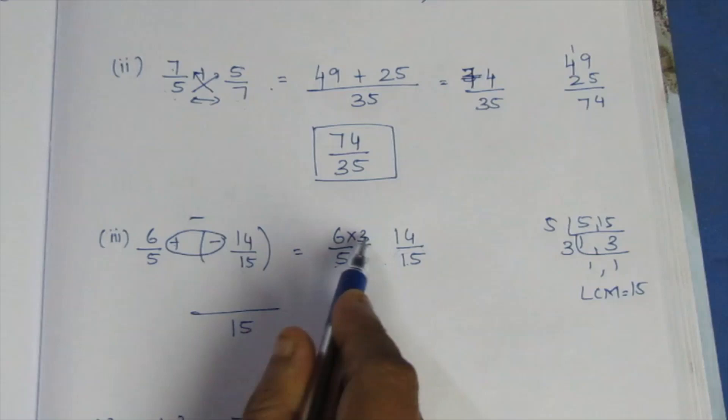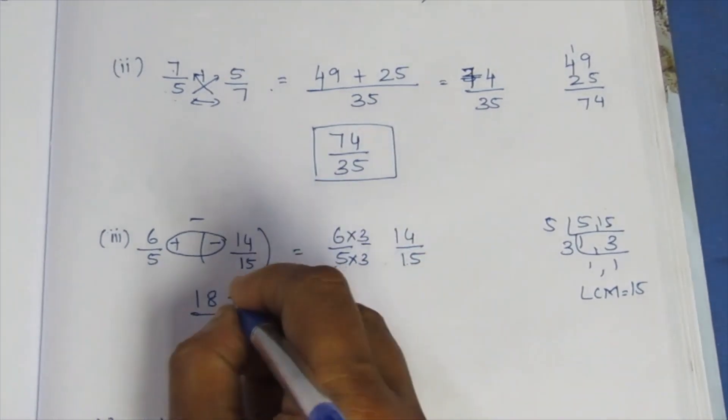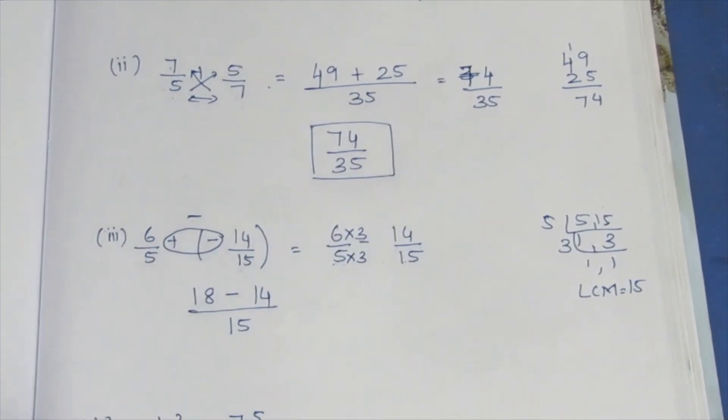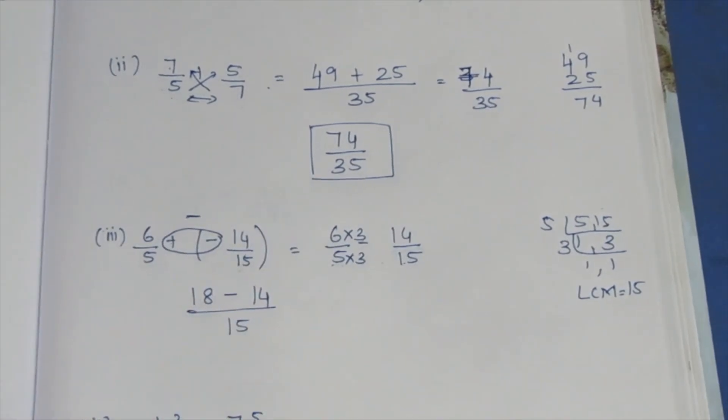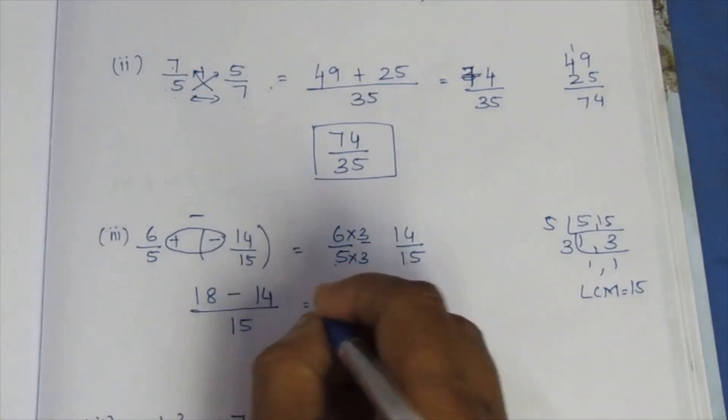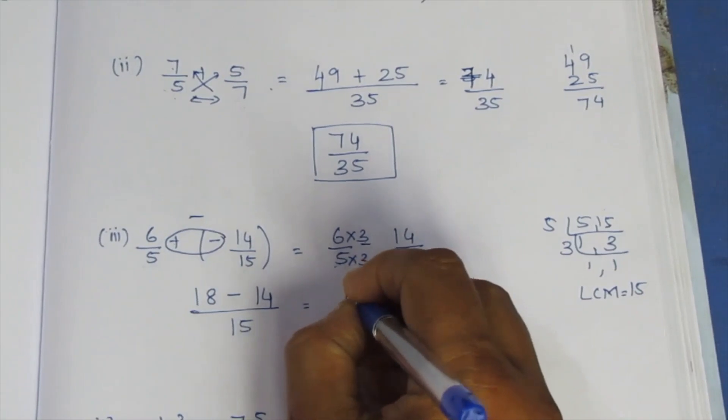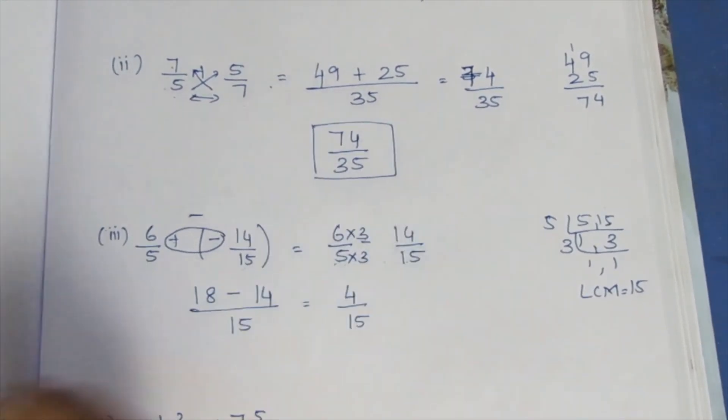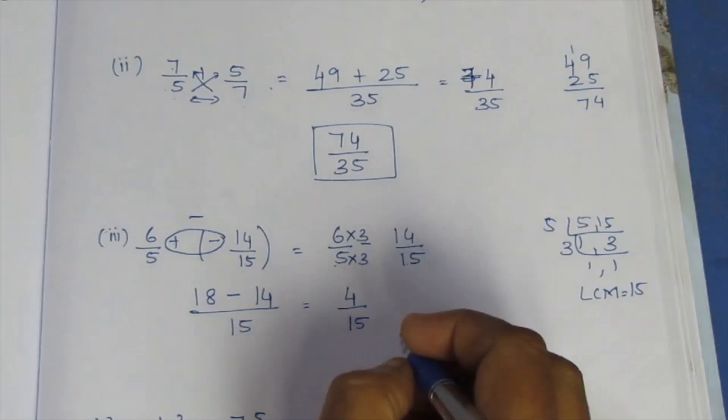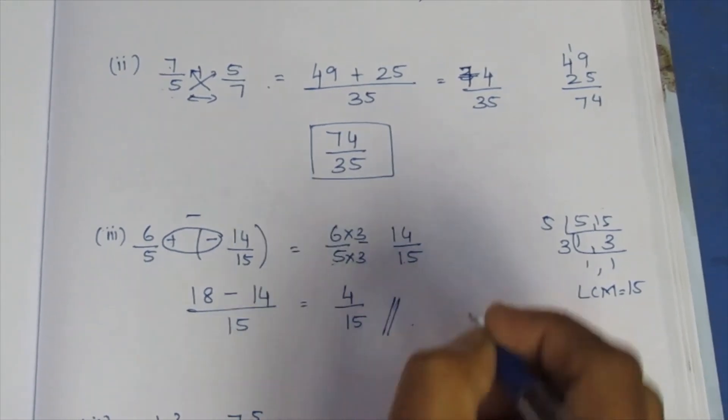Numerator multiply. 6 times 3 is 18. Minus sign is 14. This is 14. 18 minus 14 is 4. So, 4 by 15. This is the sum of answer.